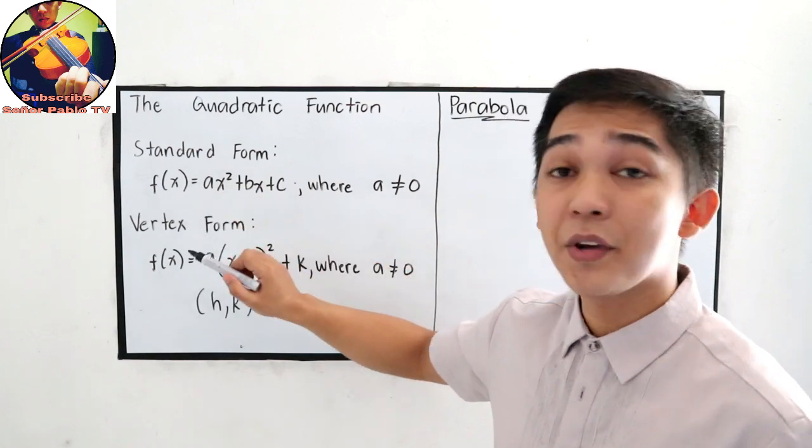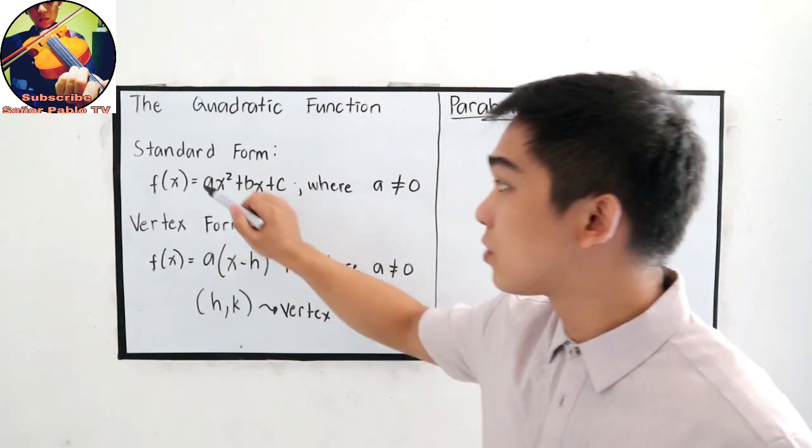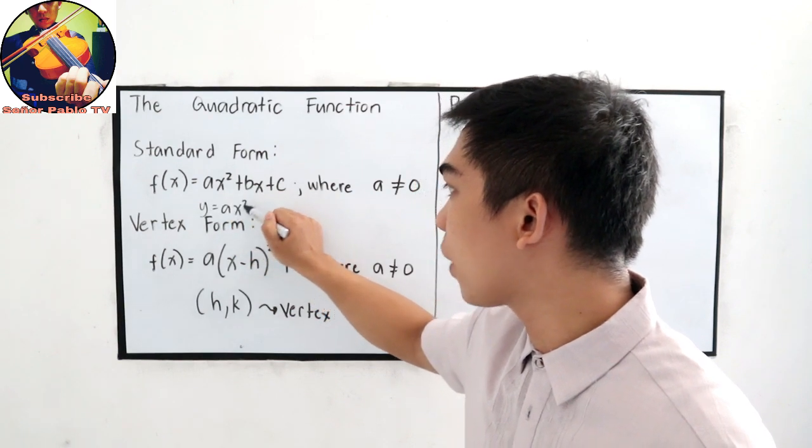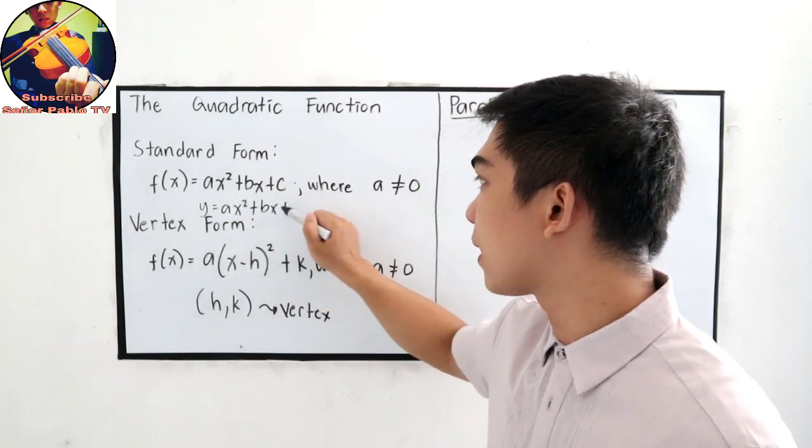And f(x) can be written as y. So it's also written as y is equal to ax squared plus bx plus c.